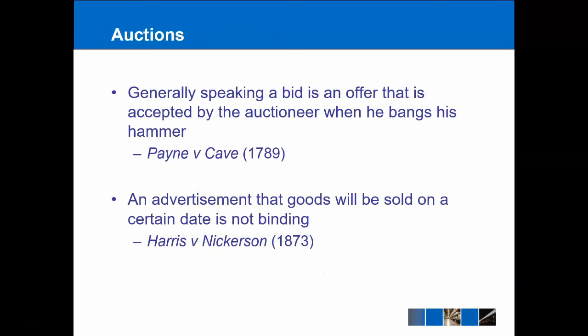Auctions are an interesting area, and often a popular topic for exam questions and courseworks in contract law. The way auctions interact with offers and invitations to treat is a little unique. Generally speaking, a bid made at an auction is an offer, which is accepted by the auctioneer when they bang the hammer. So if you bid £200 for a piece of furniture and the auctioneer brings down the hammer and says 'sold,' that is the acceptance of the offer. This is the classic formulation from Payne v Cave, 1789.